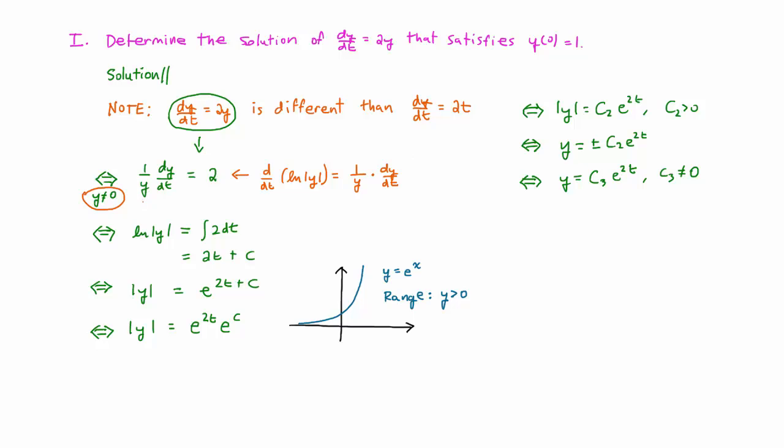But what if the function y is equal to zero for some value of t? We can answer this question by considering the slope field for our differential equation, and we don't even need to make the entire slope field. Let's imagine for now that y is equal to zero at some value of t, meaning that its graph touches the t-axis.